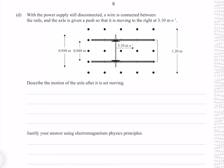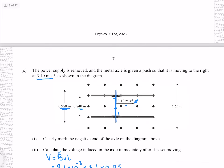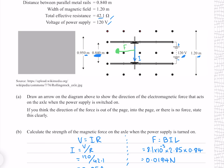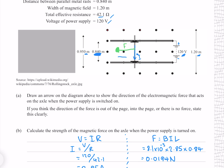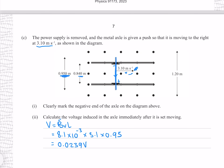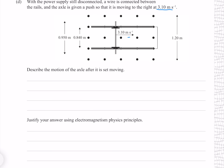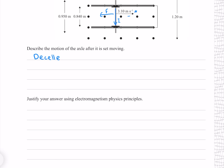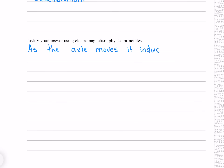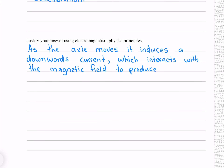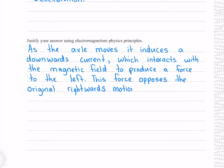With the power supply still disconnected, a wire is connected between the rails and the axle is given a push so that it is moving to the right at 3.1 metres per second. Describe the motion of the axle after it is set moving. As we established, a current flowing downwards through the axle produces a leftward force. With the axle moving right, positive charges are forced downwards, so this is the direction of the induced current. This current interacts with the magnetic field to produce a leftward force opposing the original rightward motion, causing the axle to decelerate.